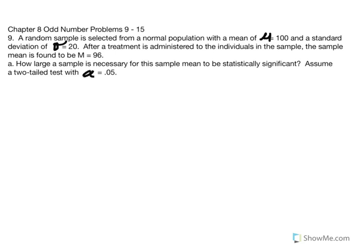Chapter 8 odd number problems, number 9 through 15. Number 9: a random sample is selected from a normal population with a mean of 100 and a standard deviation equal to 20. After a treatment is administered to the individuals in the sample, the sample mean is found to equal 96. How large a sample is necessary for this sample mean to be statistically significant? Assume a two-tailed test with alpha equal to 0.05.